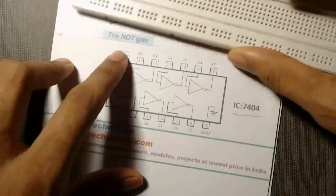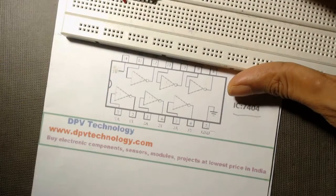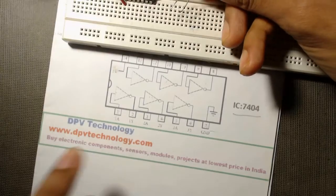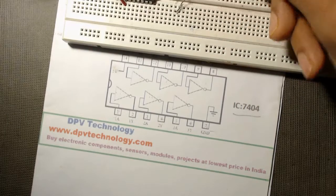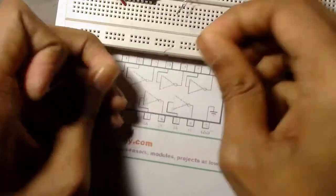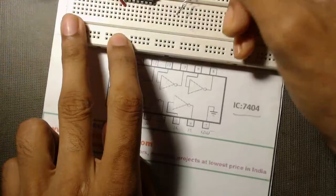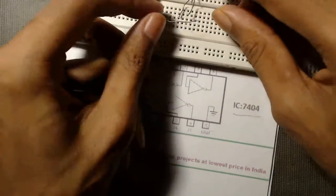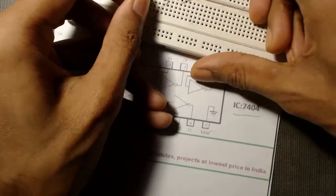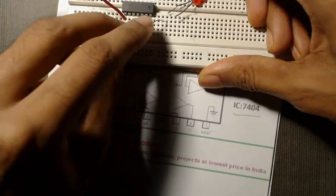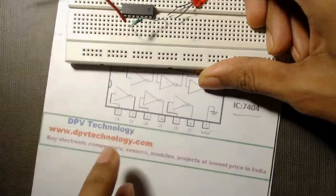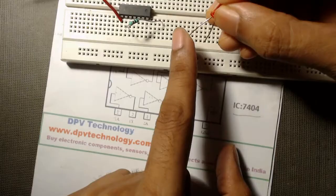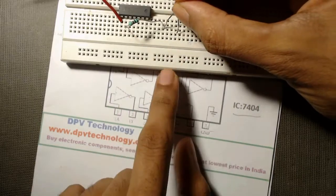Then we will connect an LED, 5mm LED at the output, that means at pin number 2, to observe the output. So for this LED we need a 100 ohm resistor. We have to connect this 100 ohm resistor to pin number 2, and connect the another terminal to any point of breadboard. Then from that point, we have to connect the positive terminal of our LED, that means this long terminal.